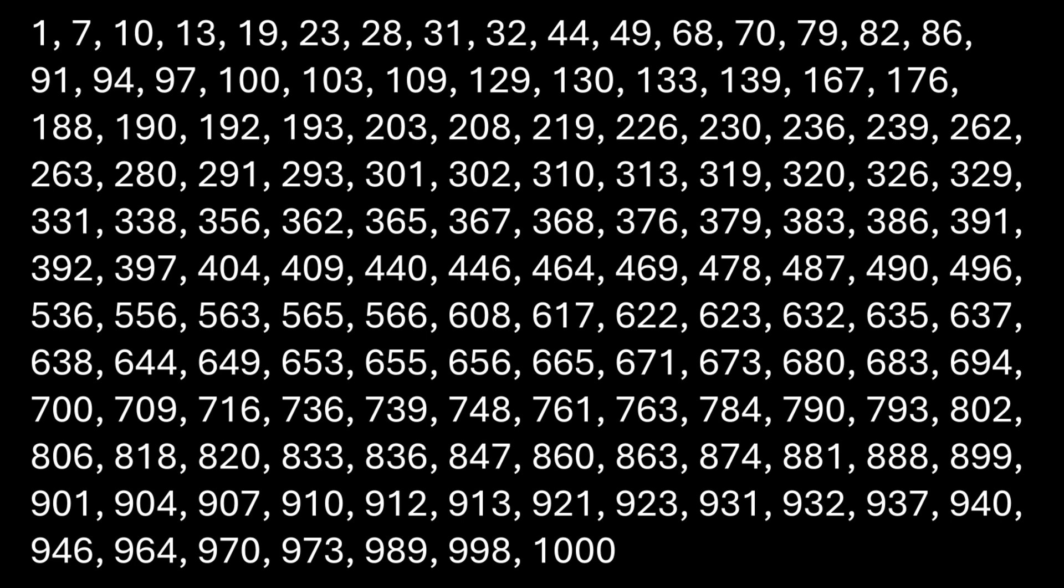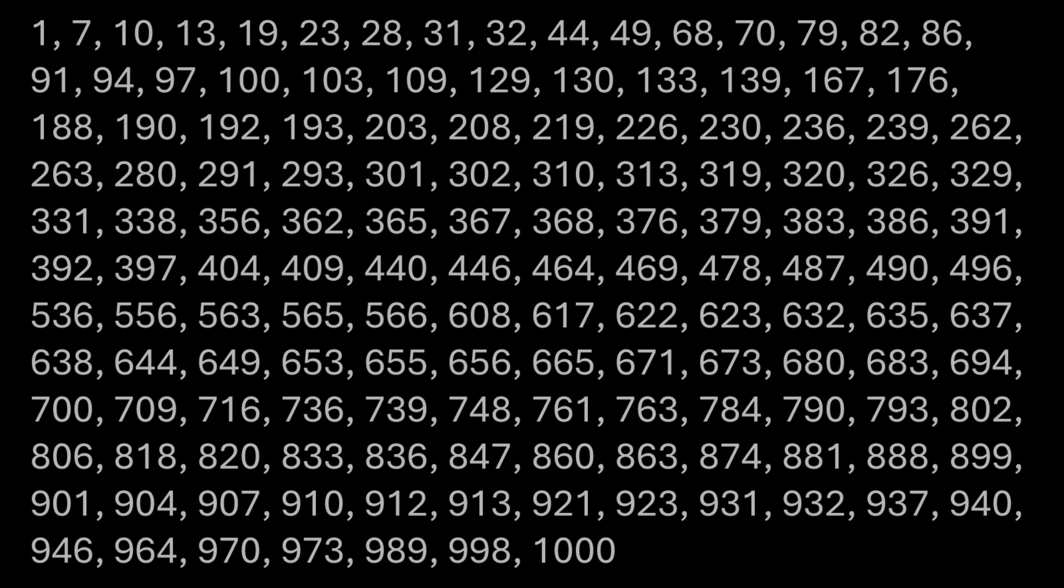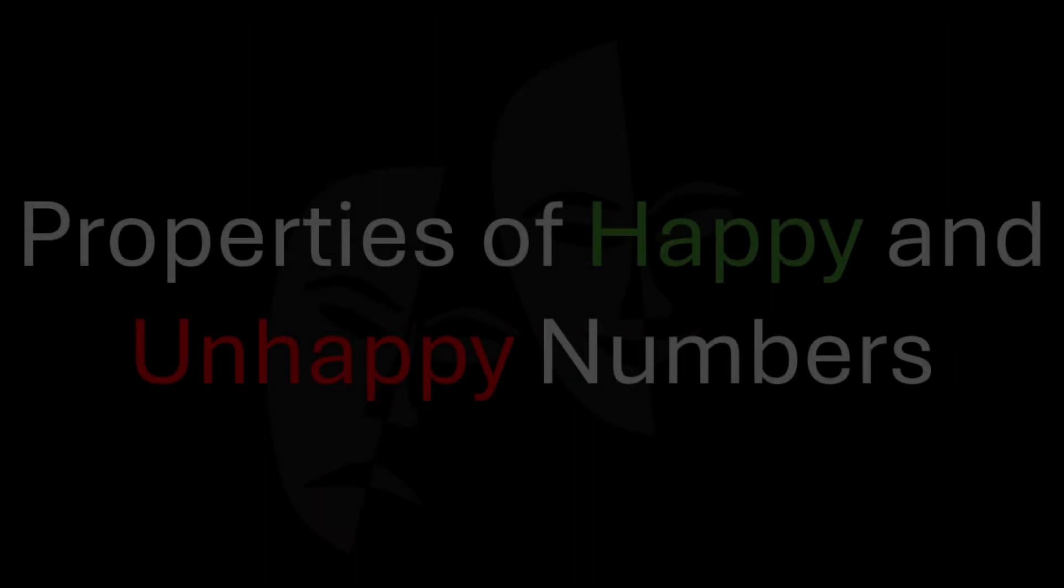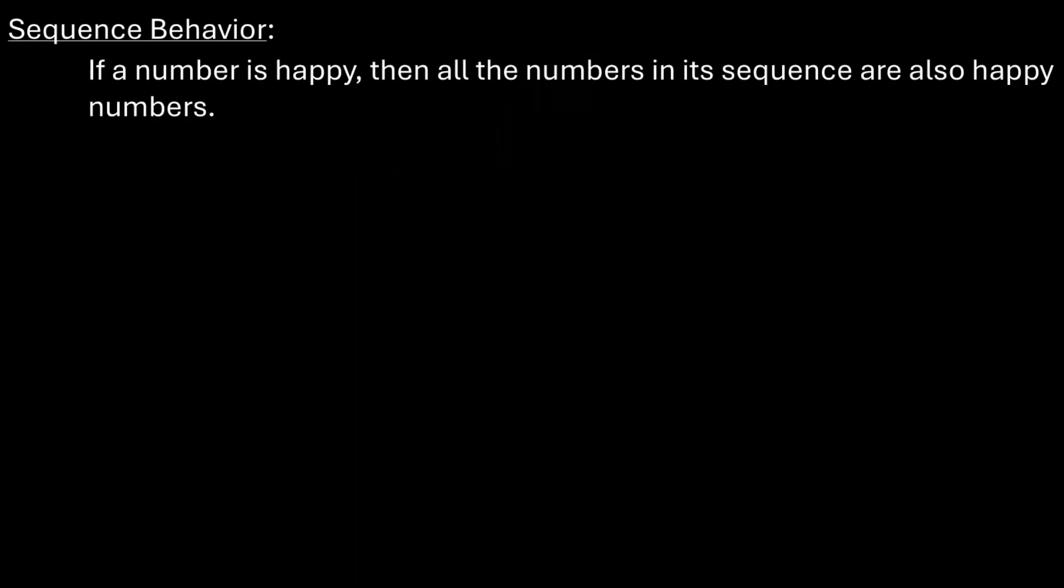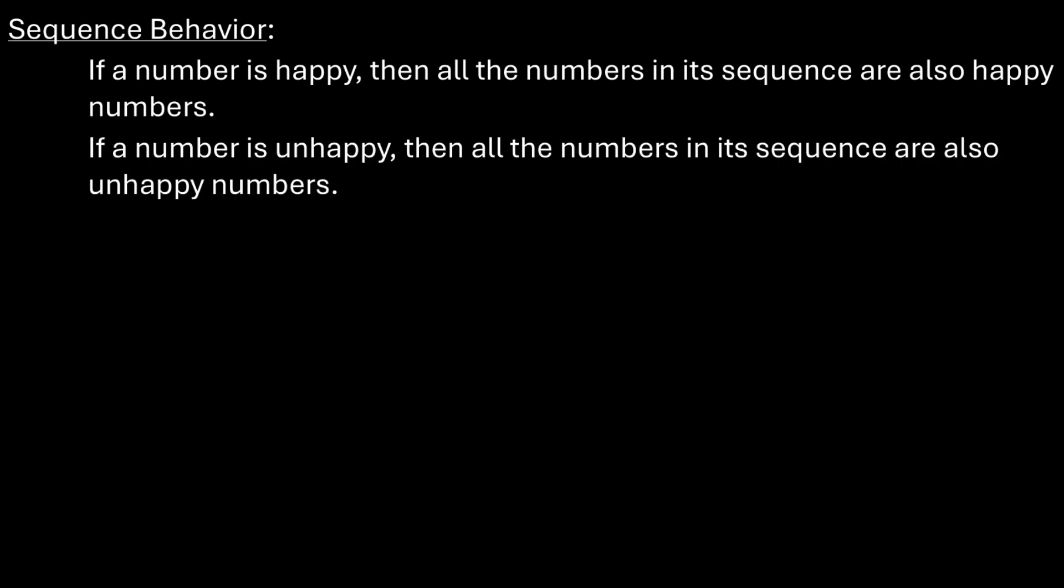These are all of the happy numbers from 1 to 1,000. If a number is happy, then all the numbers in that sequence are also happy, and if a number is unhappy, then all the numbers in that sequence are also unhappy.